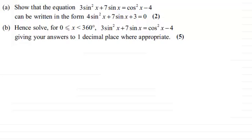Okay, welcome back then if you had a go. So for this first part then we've got to show that 3sin²x + 7sin x = cos²x - 4 can be written in this format. Now what I notice is that what we've got to show doesn't have any cosine functions in, and we've got cos²x here.